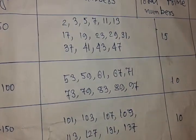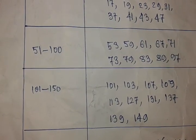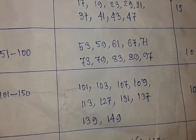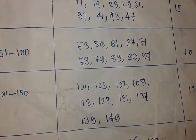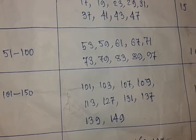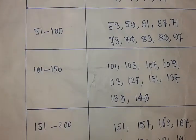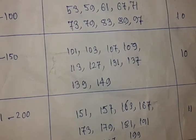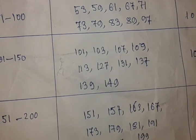And another 51 to 100. So friends, there are 10 prime numbers: 53, 59, 61, 67, 71, 73, 79, 83, 89, 97.